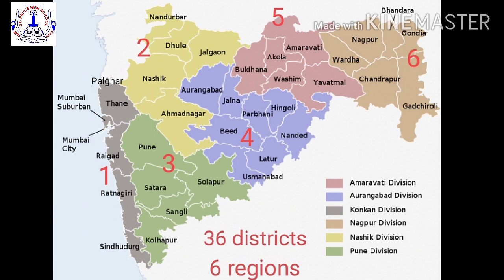Let us study these districts as per their divisions. The districts in the Konkan region are Palghar, Thane, Mumbai Suburban, Mumbai City, Raigad, Ratnagiri, and Sindhudurg. The districts in the Nashik region are Nashik, Nandurbar, Dhule, Jalgaon, and Ahmadnagar.